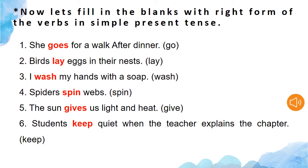Now that we know the rules for using s or es in present tense and we know the singular and plural subjects, let's do one exercise. Let's fill in the blanks with the right form of the verbs in simple present tense. The first sentence is: she ___ for a walk after dinner. What is the right form of go? It will be goes. She goes for a walk after dinner.